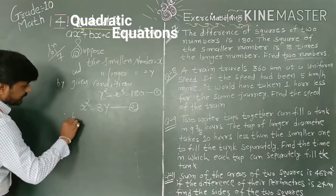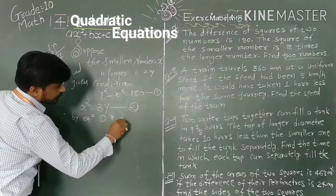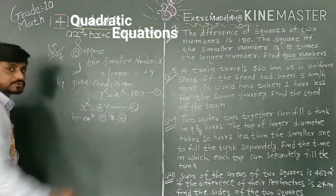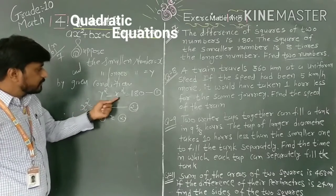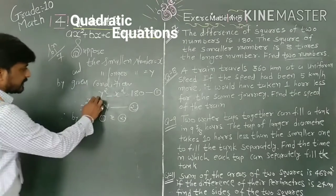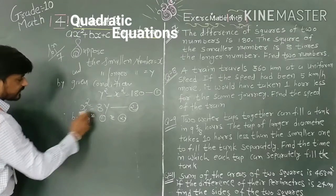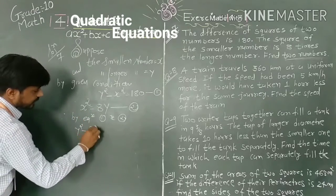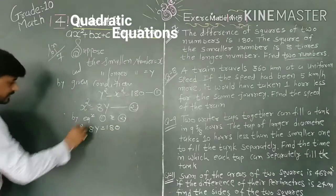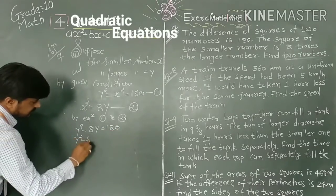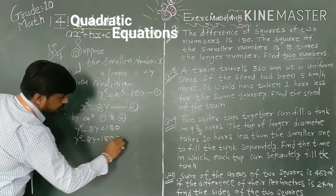Now solve these equations using the substitution method. I put x² = 8y into equation 1. Therefore y² - 8y = 180. Transferring to the left side: y² - 8y - 180 = 0.